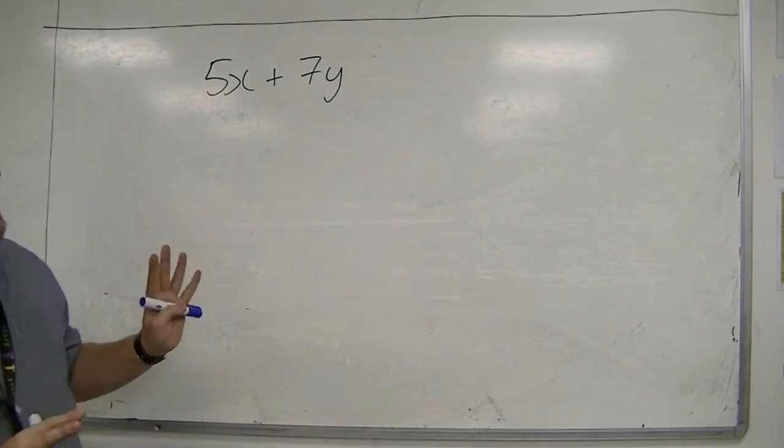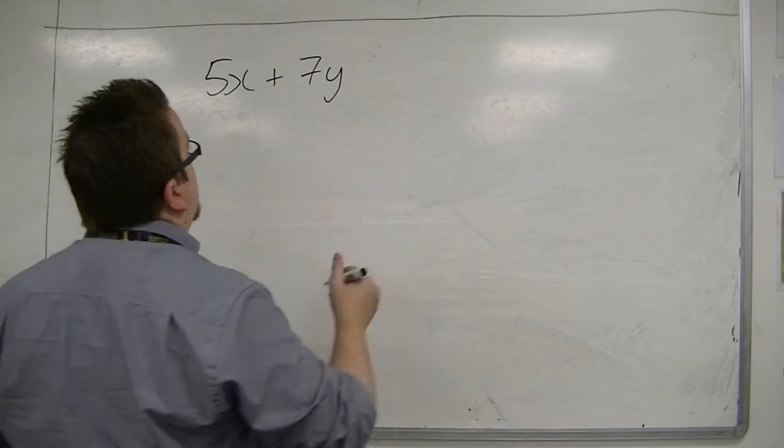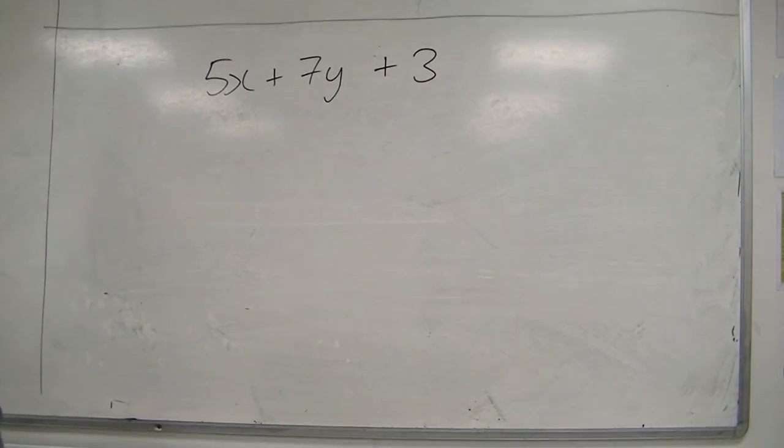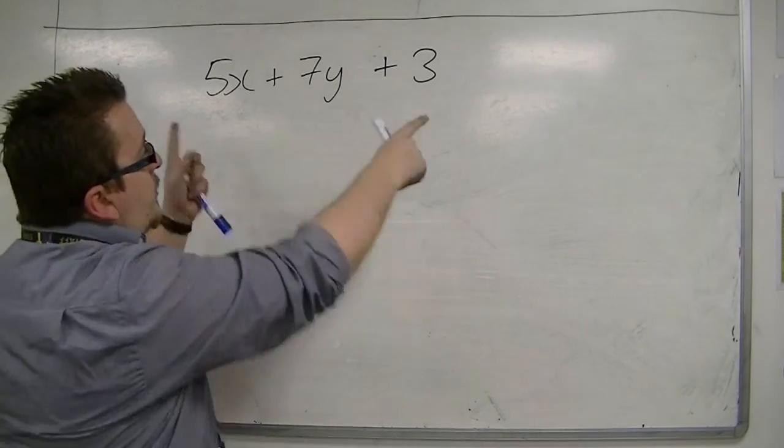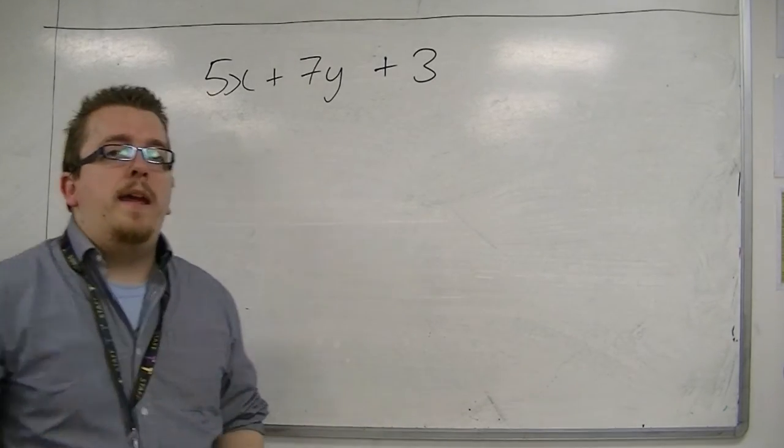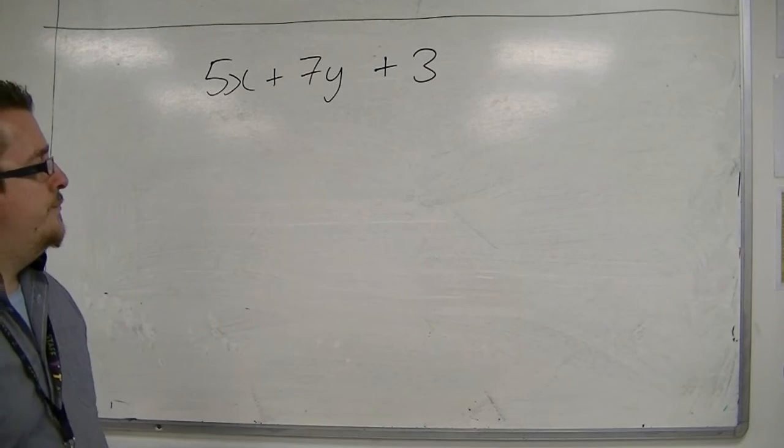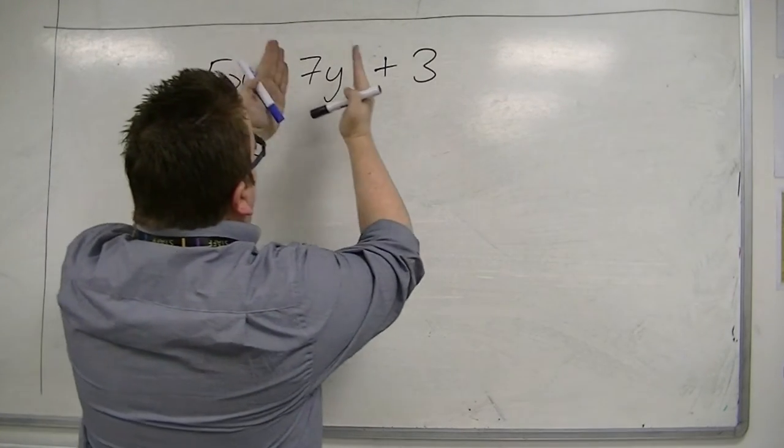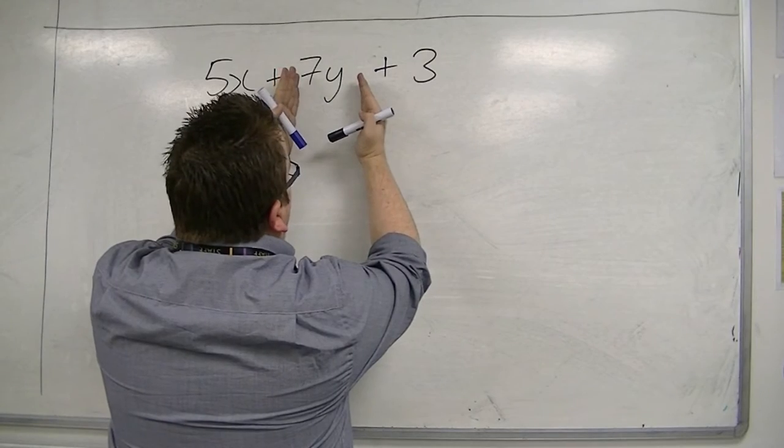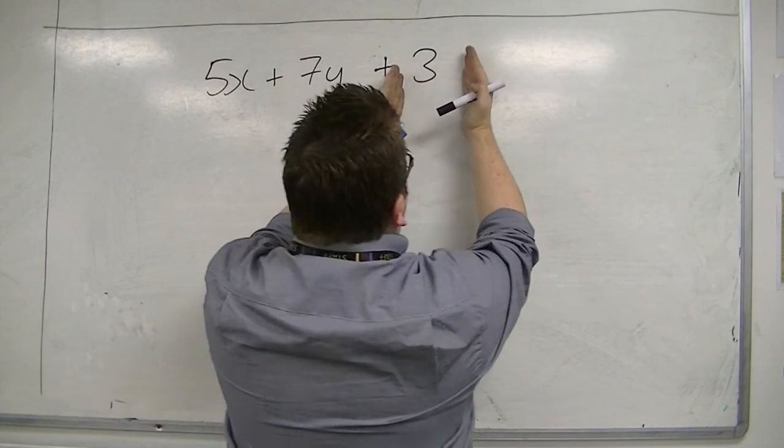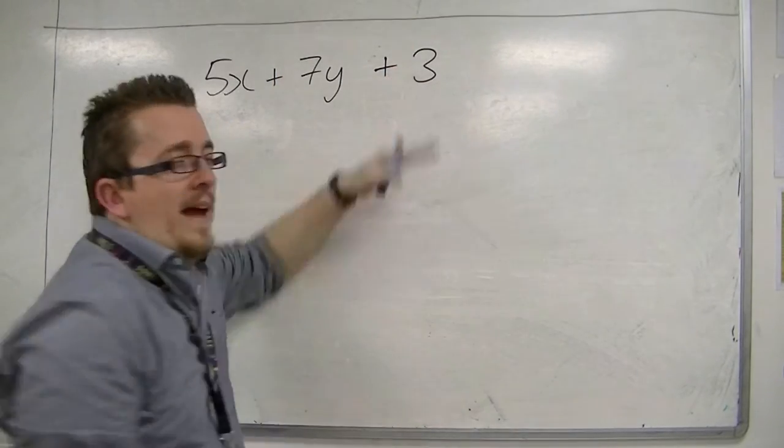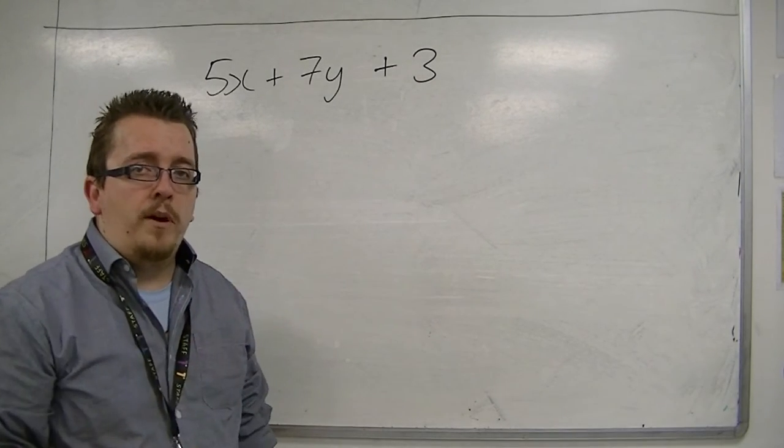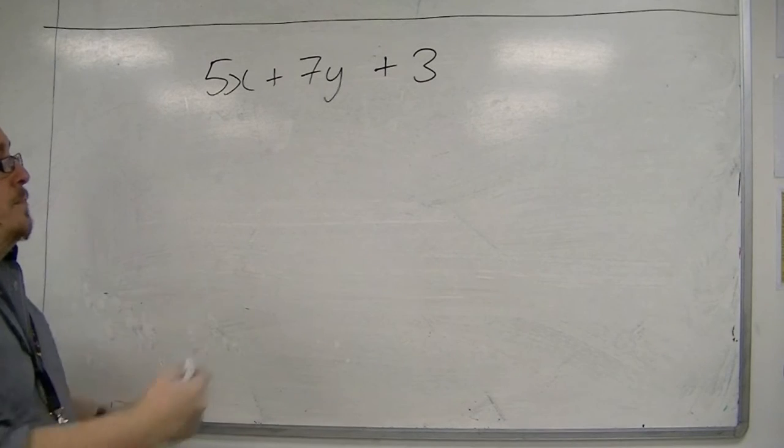Well, you can also say that if I just added in a random number, so three, then likewise I cannot combine any of these things. The x's are by themselves in one pile, the y's are by themselves in a pile, and whatever numbers you have left over that have no letter next to them, they are also in a separate pile of things. They cannot be muddled together.